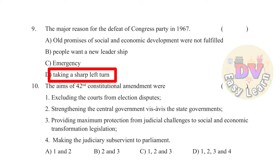Question 10: The aims of the 42nd Constitutional Amendment were: excluding the courts from election disputes; strengthening the central government vis-à-vis the state governments; providing maximum protection from judicial challenges to social and economic transformation legislation; and making the judiciary subservient to Parliament.